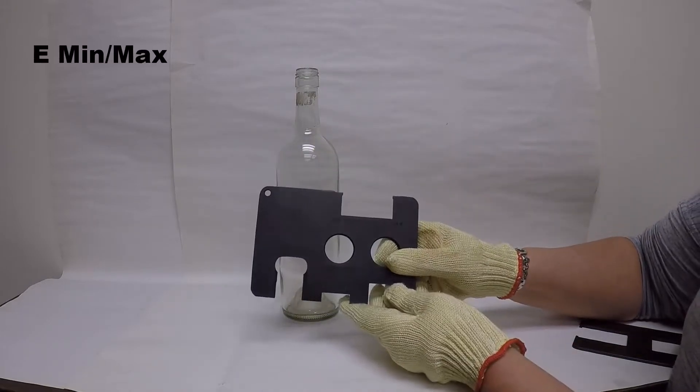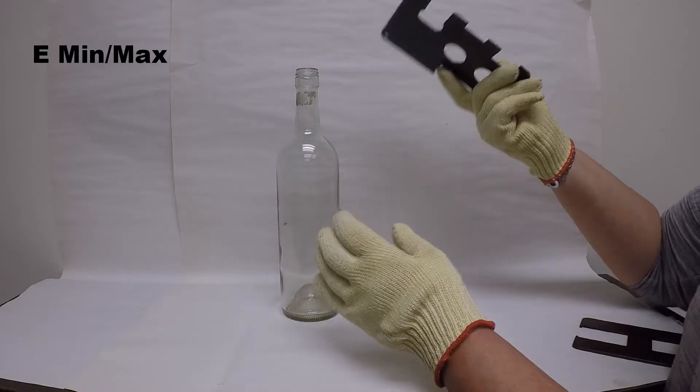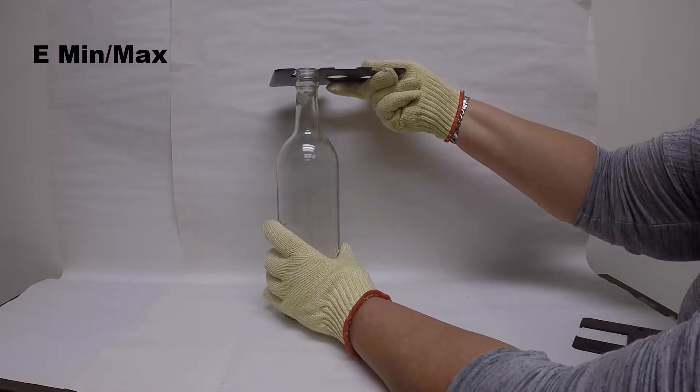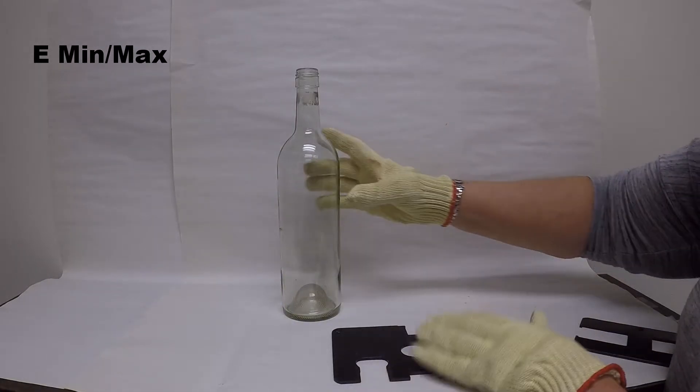We're going to start out with the E min and max. It has a cutout here for the max and a cutout here for the min. Normally when you use this gauge, you'll be gauging the bottle standing up, but for demonstration purposes we're going to lay the bottle down.